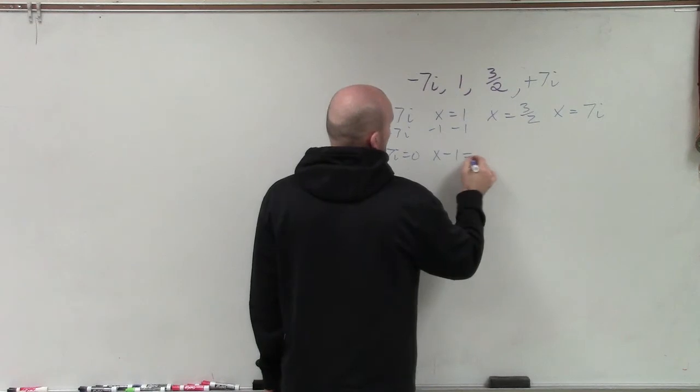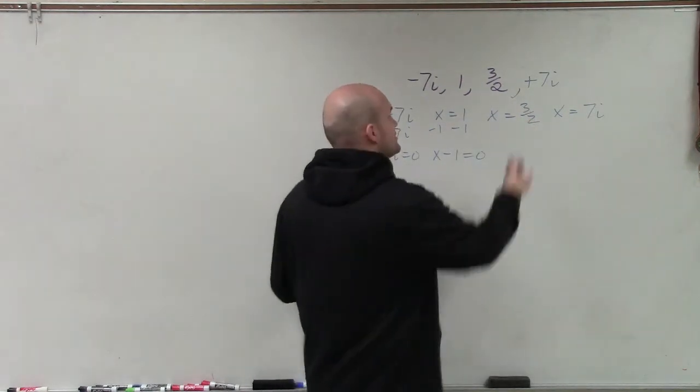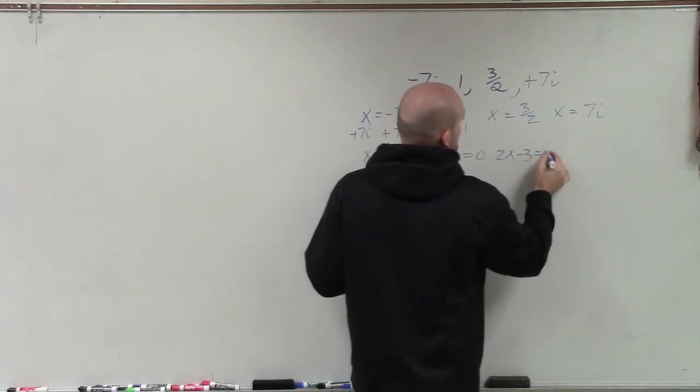Subtract 1, subtract 1. x minus 1 equals zero. Here, again, remember when you have a fraction, use inverse operations. So multiply by 2, then subtract 3. So therefore, I have 2x minus 3 equals zero.